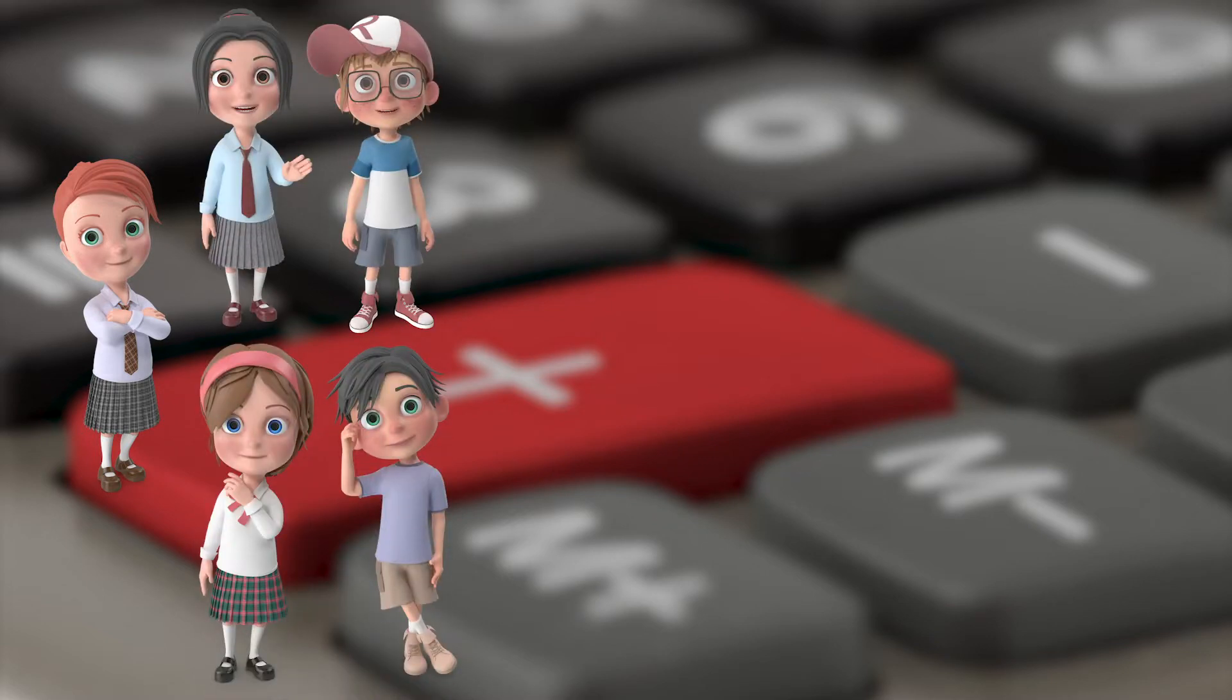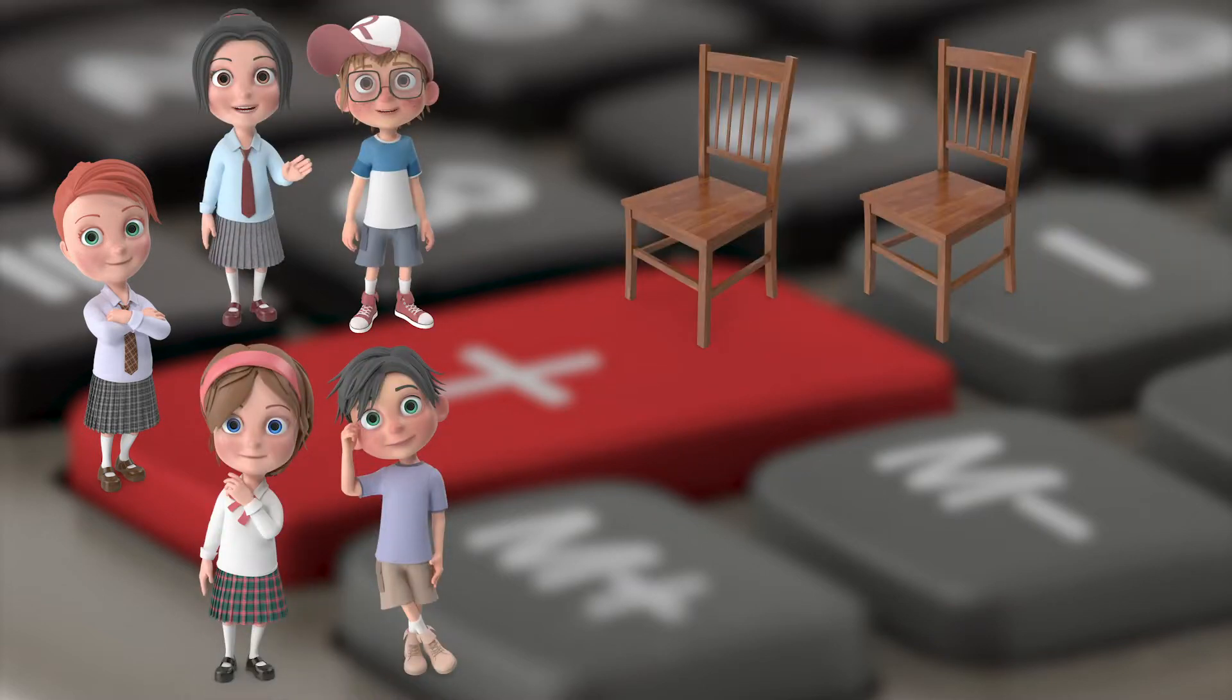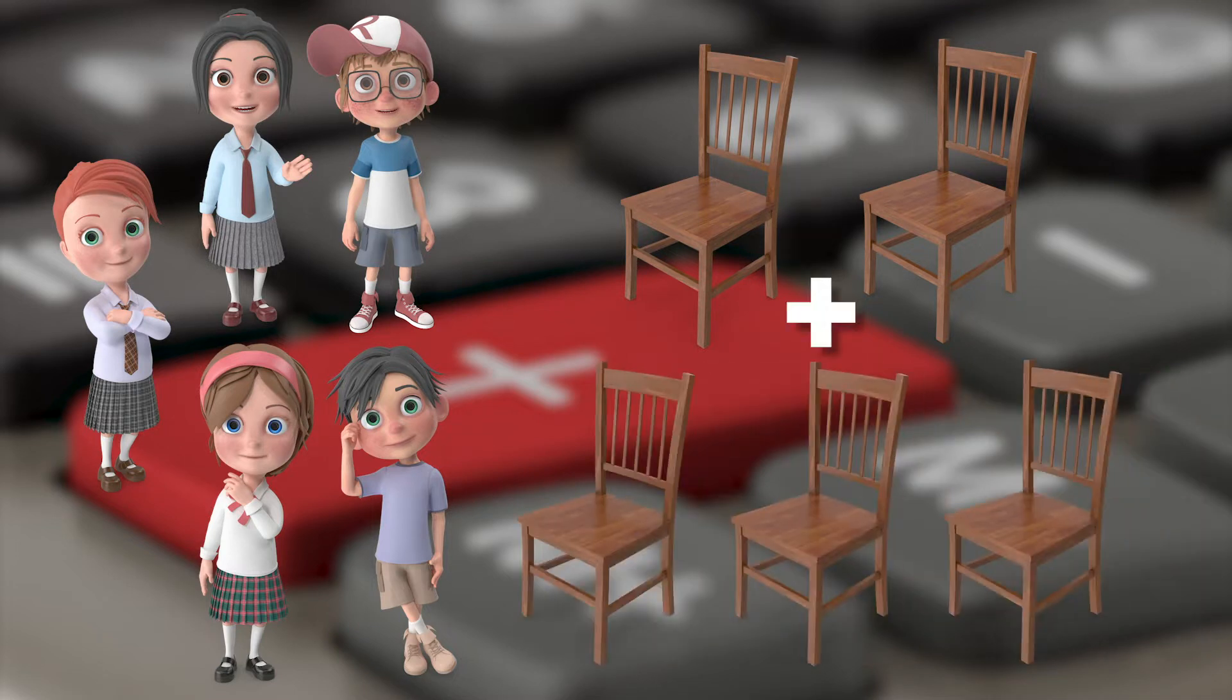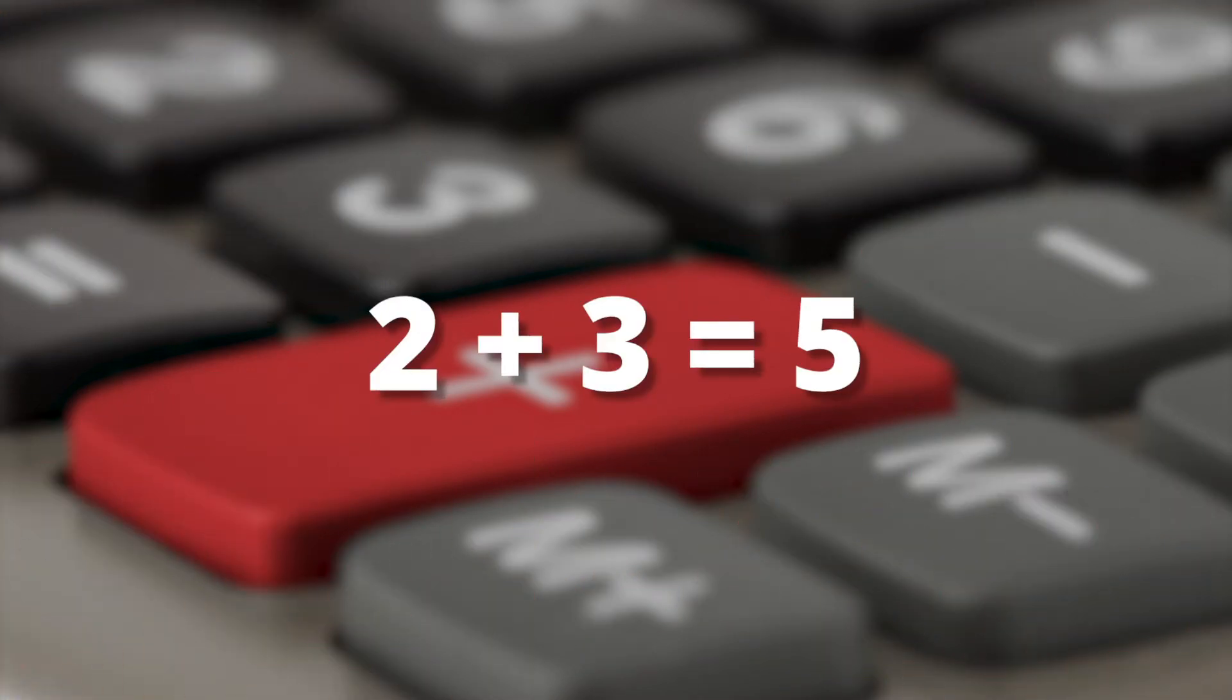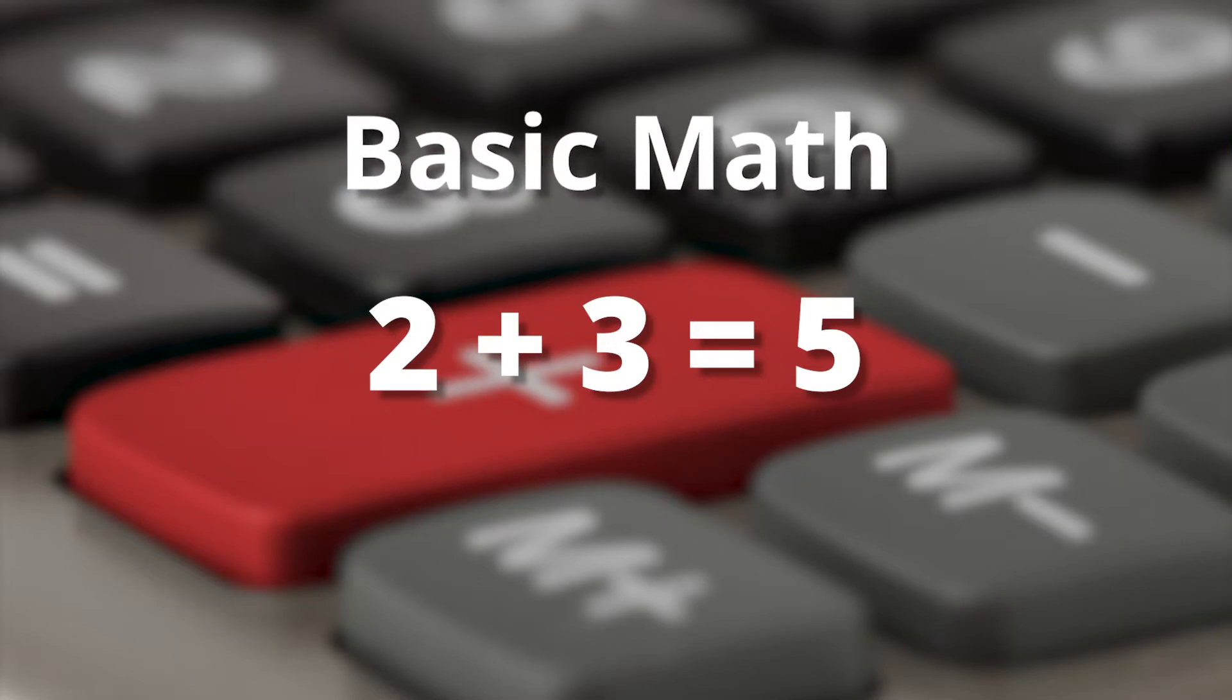Let's say you have four friends over for dinner, but only have two chairs at the table. You'll need to add more chairs so all five of you can sit. So to get five chairs, you'll need to add three to the two you already have. Two plus three equals five. This is known as basic math.